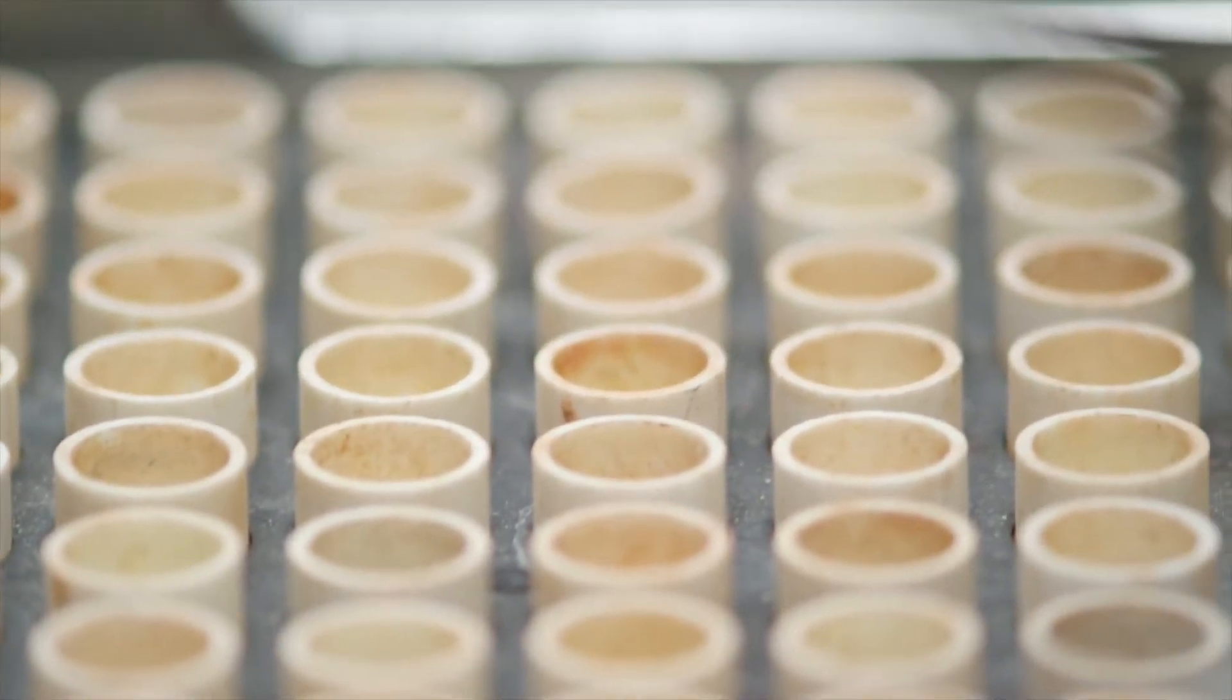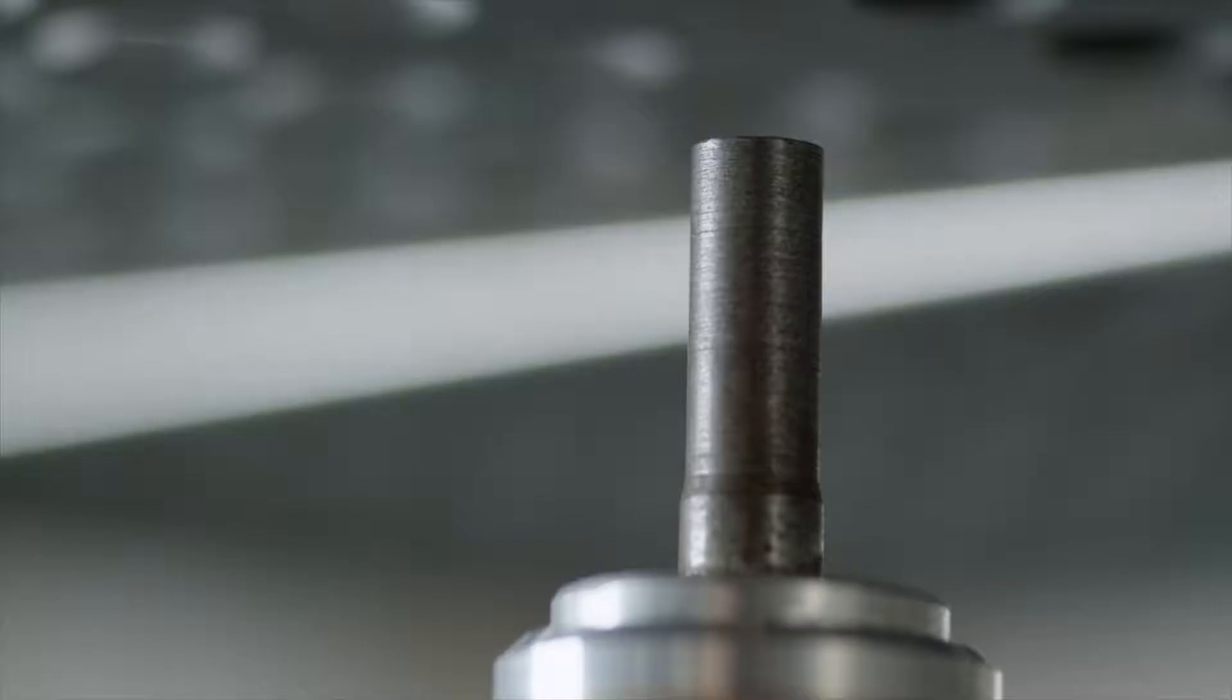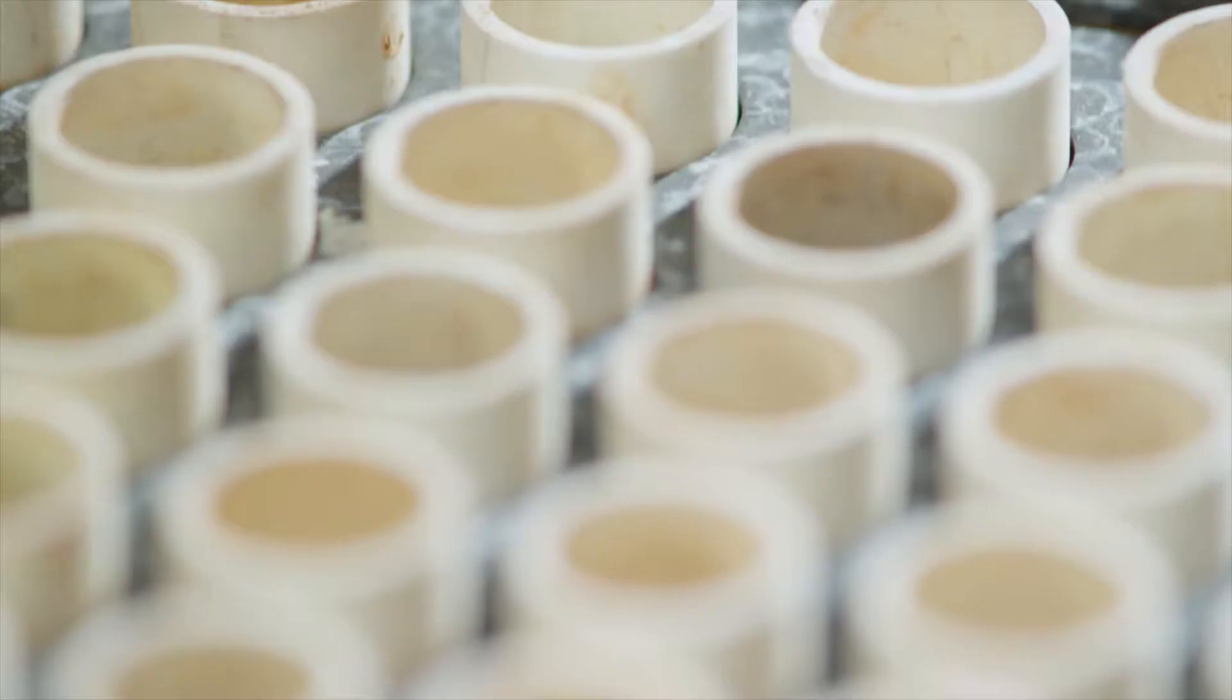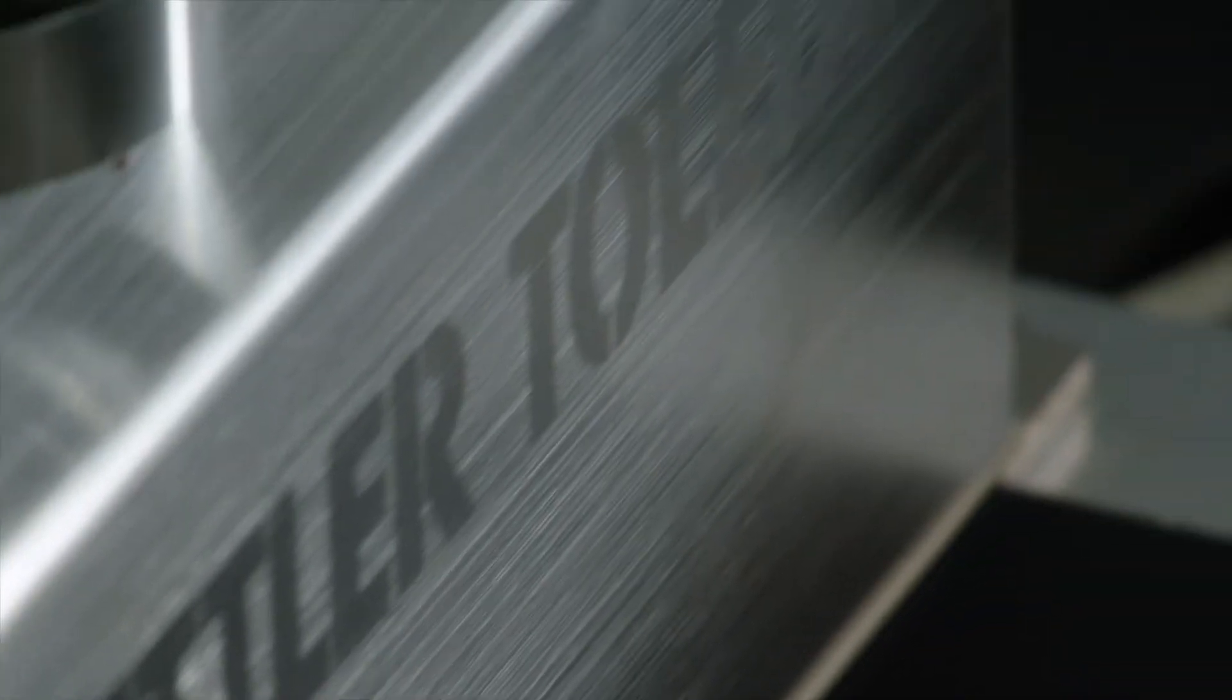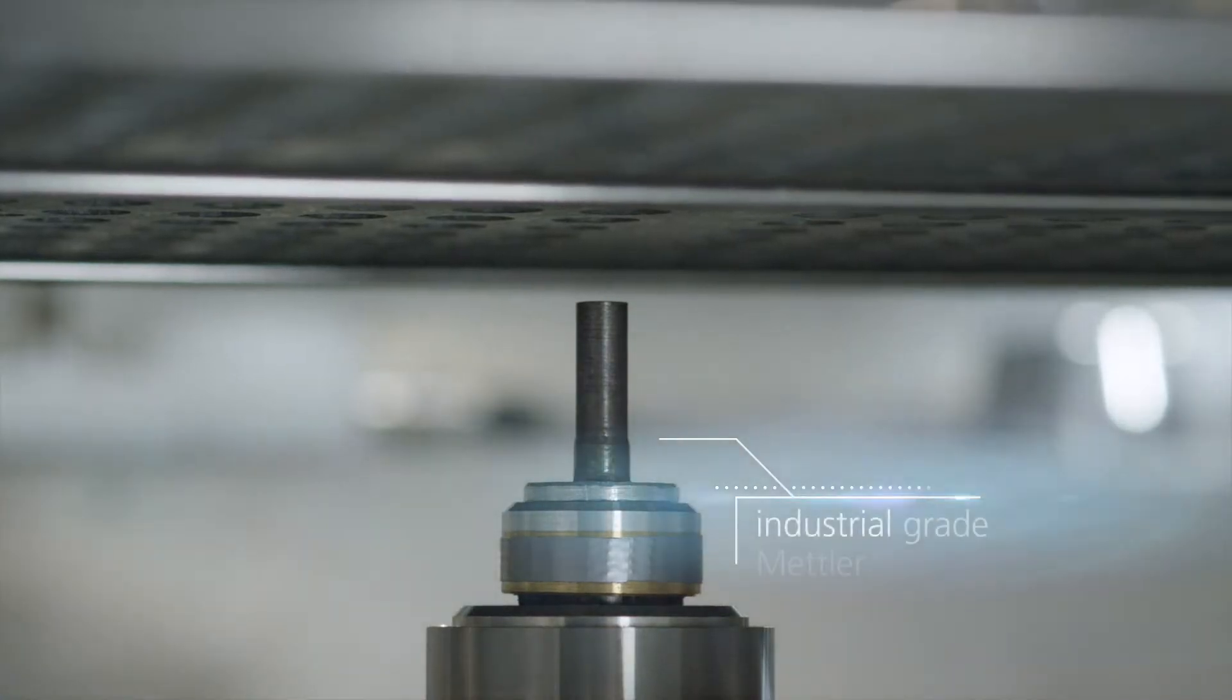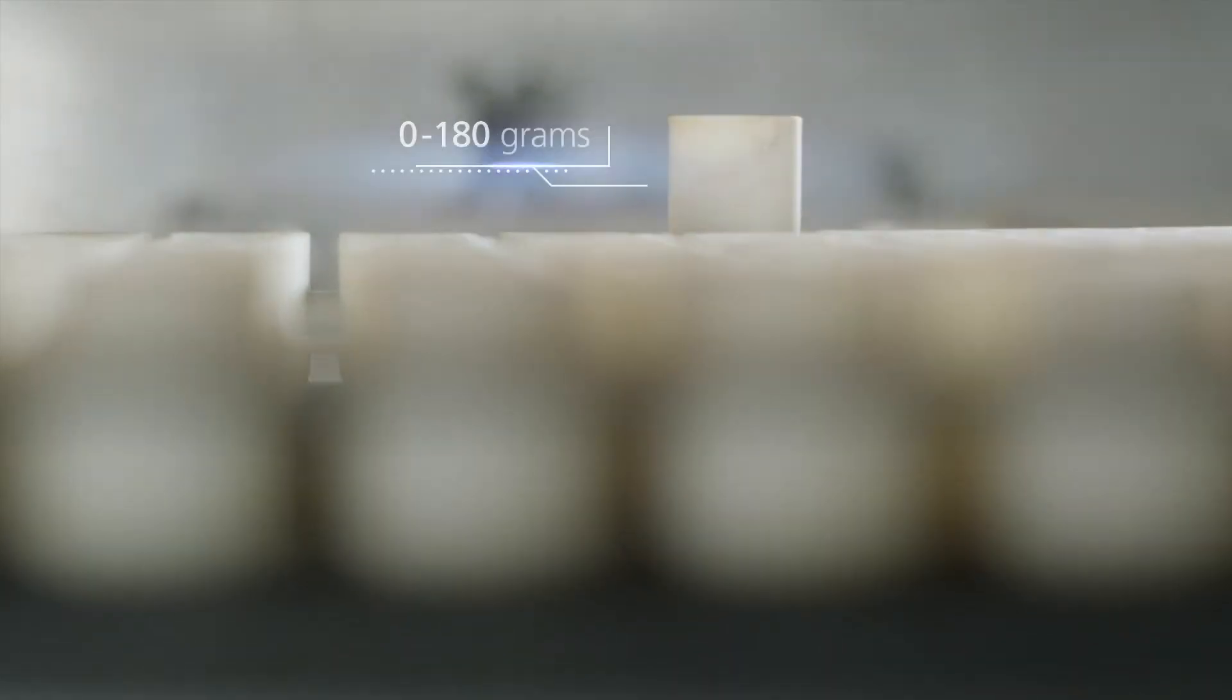The actual weighing process is now ready to start. The tray is lowered over the weighing pin, freeing a single crucible. The industrial-grade Mettler-Toledo balance allows samples of up to 180 grams to be measured precisely.